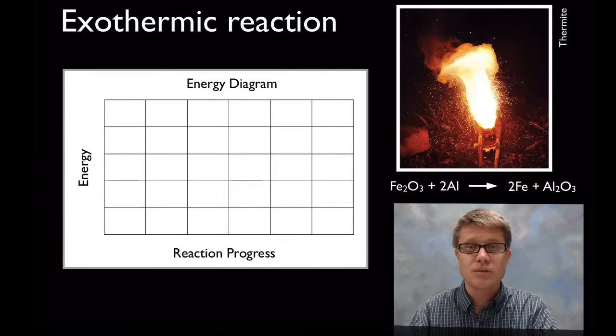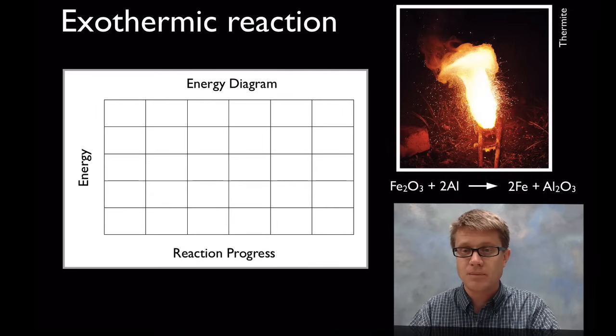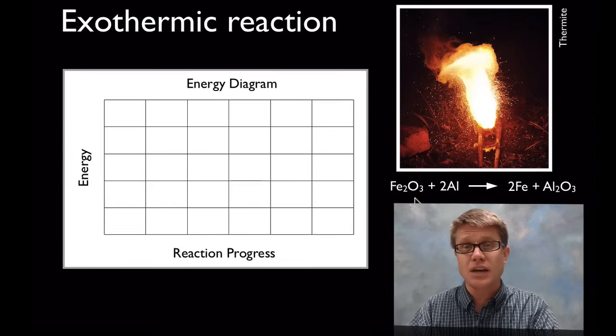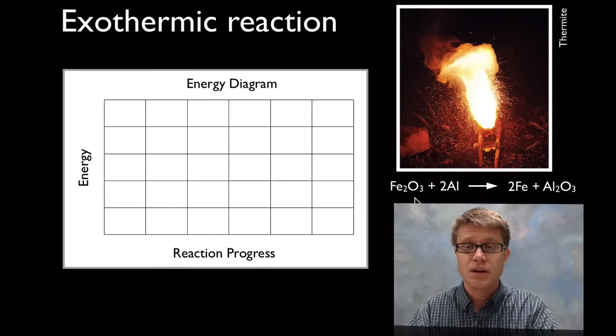Here's that exothermic reaction again. We've got a thermite reaction where we're taking iron oxide and aluminum. And we're making iron and aluminum oxide. Now this is a really intense reaction and it actually provides the oxygen in this form of combustion. And so this should be able to work even under water.